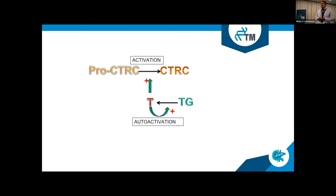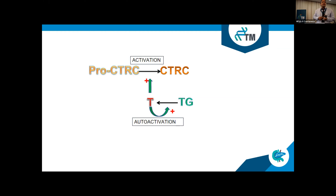One part of these inhibitory mechanisms is connected to the CTRC gene. CTRC is also produced by the acinar cells of the pancreas, and can be activated by even a small amount of active trypsin.